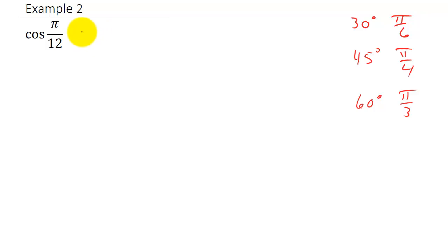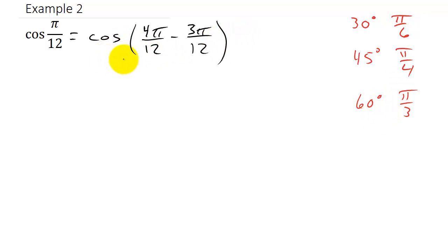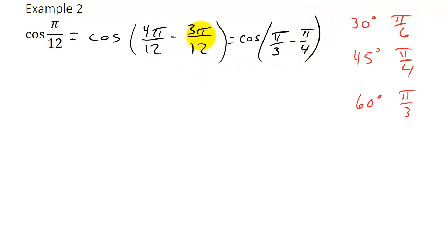So we're going to rewrite π/12. With a denominator of 12, we can write 4π/12 minus 3π/12 — the 4 and 12 cancel to give π/3, and the 3 and 12 cancel to give π/4. So this equals cosine of (π/3 − π/4) once we reduce those fractions.